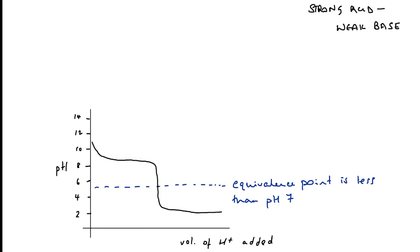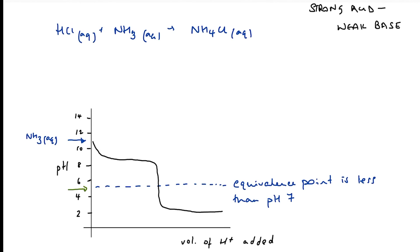And finally, let's consider a titration curve for titration between a strong acid and a weak base. So my example here might be hydrochloric acid reacting with ammonia to form ammonium chloride in solution. In this particular case, we would add the acid from the burette to the weak base solution, which explains why my curve is essentially back to front. I start off with a very high pH because I'm starting off here with a solution of ammonia.